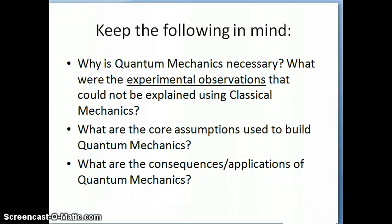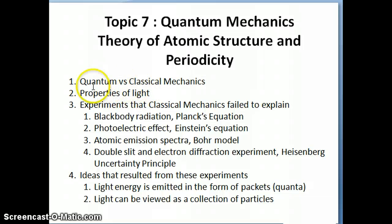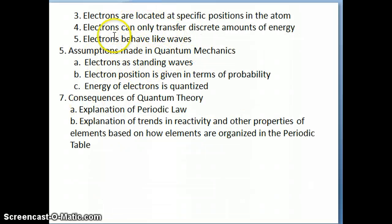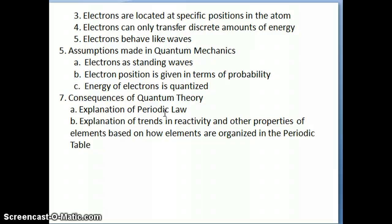Going back to the slide, I want to give you a quick overview of the topics we're going to cover. First, we're going to talk about the main difference between quantum and classical mechanics. We'll talk a little bit about properties of light, because it's important to understand light in order to understand quantum mechanics. Then we're going to talk about the experiments that classical mechanics failed to explain, what ideas came from those experiments, and using those ideas, what assumptions we make in quantum mechanics to develop the theory. And lastly, we're going to talk about the consequences of the theory — particularly its impact on the periodic table and explaining how the periodic table is organized.